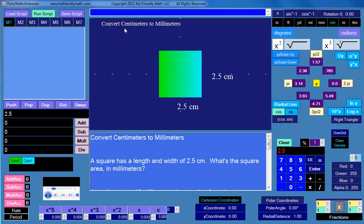In this lesson we'll practice converting from centimeters to millimeters and solve this problem. The square has a length and width of 2.5 centimeters. What's the square area in millimeters?